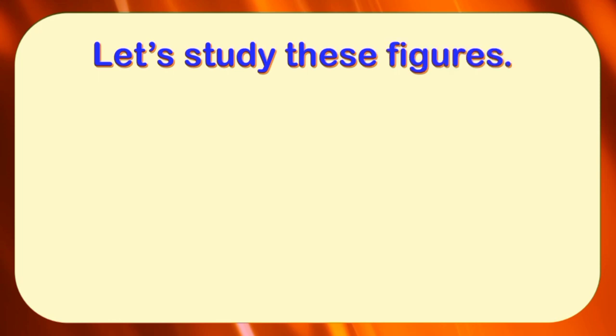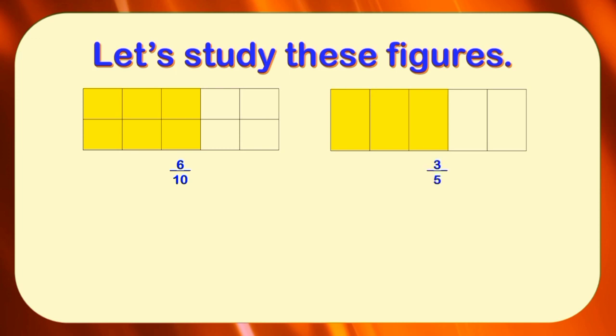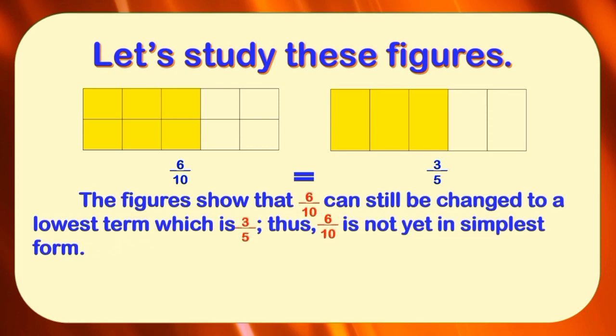Let's study these figures. The fractional form of the shaded parts in Figure 1 is equal to six-tenths, while in Figure 2, it is equal to three-fifths. If you will notice, children, the two figures are equal. Six-tenths is equal to three-fifths. Therefore, the figures show that six-tenths can still be changed to a lowest term, which is three-fifths. Thus, six-tenths is not yet in simplest form.